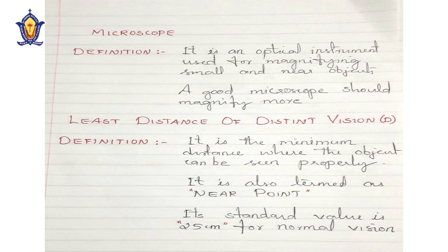The least distance of distinct vision — as we already studied in 10th standard, its value for a normal eye is 25 centimeters, and it is also called the near point. To understand this concept: suppose there is a book in front of you and you are comfortable reading it. If you bring the book very close to your eyes, you cannot read it properly. There should be a minimum distance between our eye and the book — that distance is called the least distance of distinct vision.